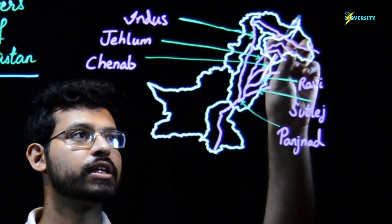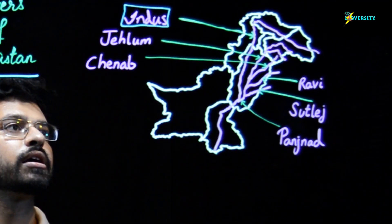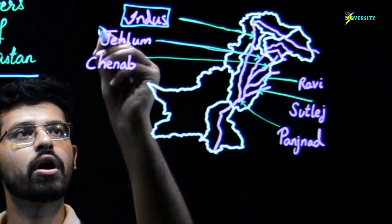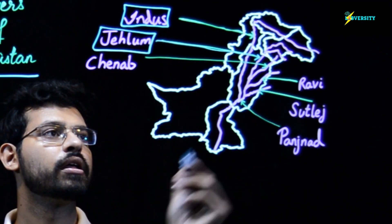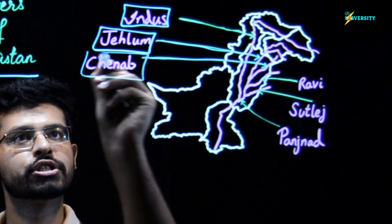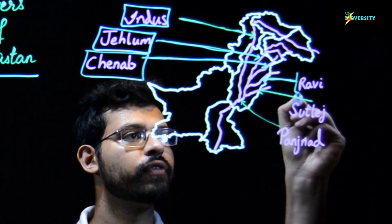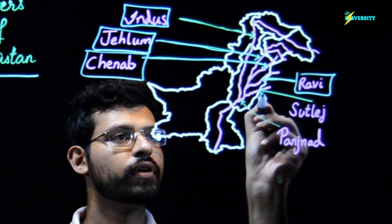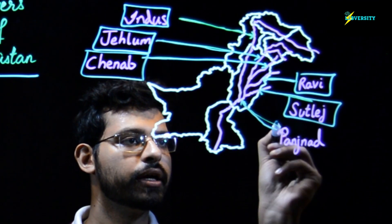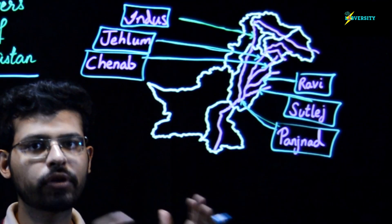On this map we have River Indus, then this one is called River Jhelum, then we have River Chenab. On the side we have River Ravi, then we have River Sutlej, and this one over here is River Panjnad.